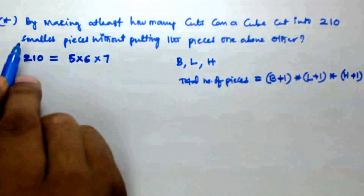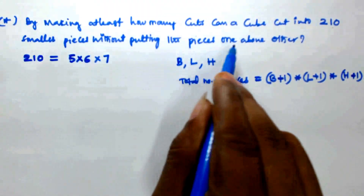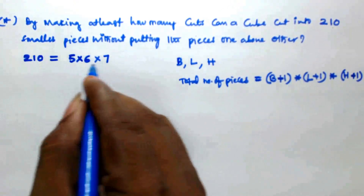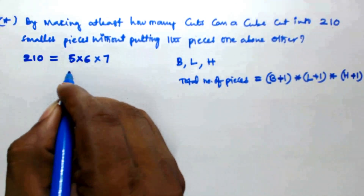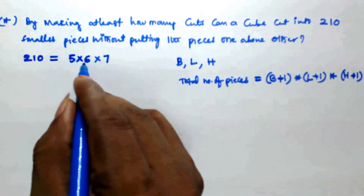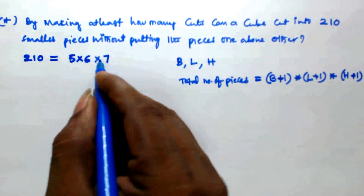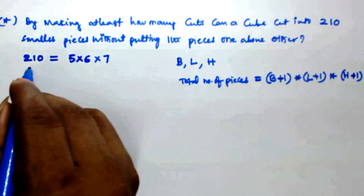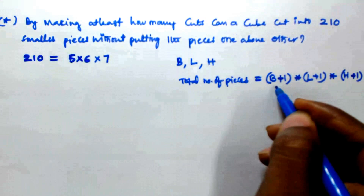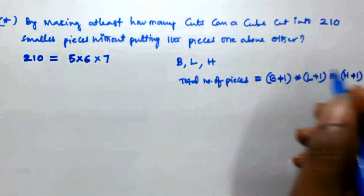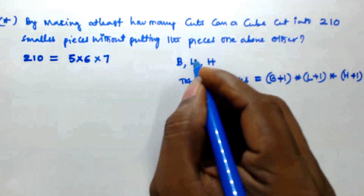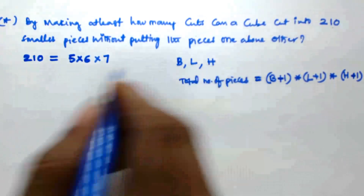So 210 can be written as 5 × 6 × 7 because 5, 6, and 7 are equally distributed and their product is 210. Applying the formula — total number of pieces equals (b+1)(l+1)(h+1) — this same equation can be written as (4+1) × (5+1) × (6+1).